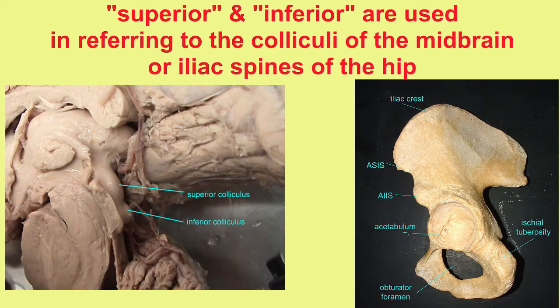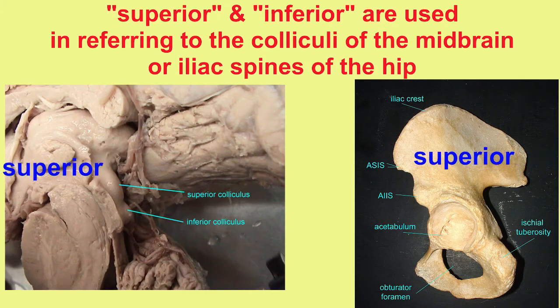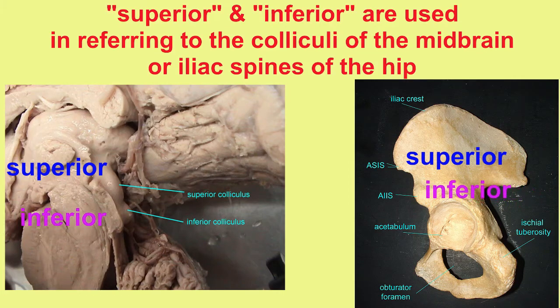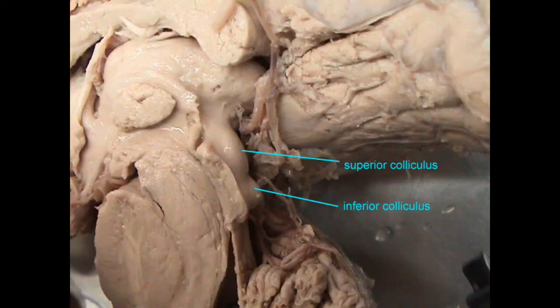Finally, there are even examples of anatomical structures which have words like superior or inferior in their names. In the midbrain, there are two bumps which process vision and hearing. One is called the superior colliculus and one is called the inferior colliculus, because one is above the other.